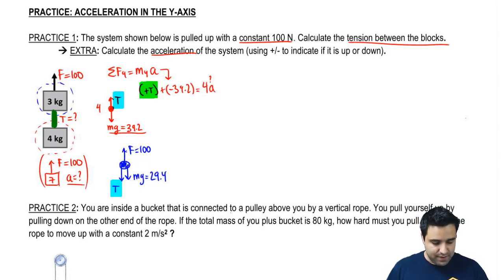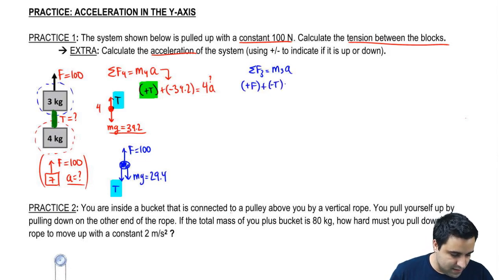So now I can write F equals MA for this guy. Sum of all forces in the three is the mass of the three times the acceleration. I can list them: positive F minus T, or plus negative T plus negative mg equals the mass is 3 and A.